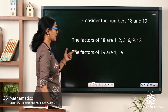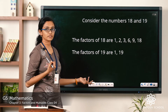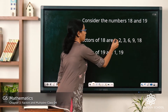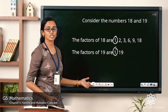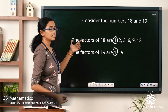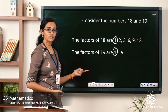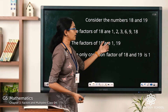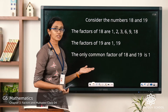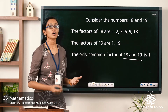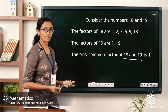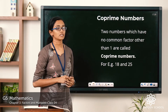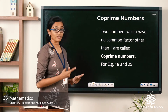The factors of 19 are 1 and 19. Do you see any common factors for 18 and 19? Yes — 1 is common to both. Are there any other common factors? No. So the only common factor of 18 and 19 is 1. Therefore, 18 and 19 are co-prime numbers. Co-prime numbers are two numbers which have only 1 as their common factor — no other common factor.